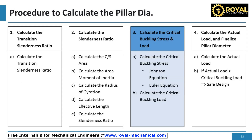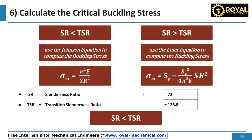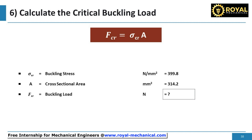Next, let's calculate the critical buckling stress and load. Since the slenderness ratio SR is less than the transition slenderness ratio, we use the Johnson equation to calculate the critical buckling stress. The formula is: sigma CR is equal to pi squared times E divided by SR squared. Substituting the values, the critical buckling stress sigma CR is 399.8 newtons per square millimeter. Using the formula FCR is equal to sigma CR times A, the critical buckling load FCR is 125,604.1 newtons.